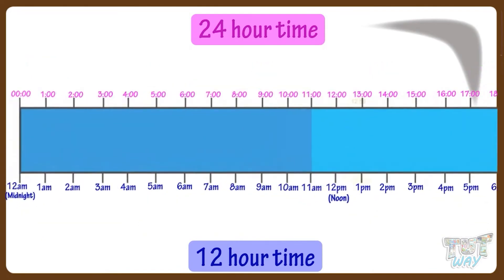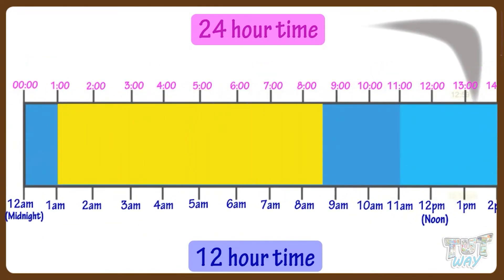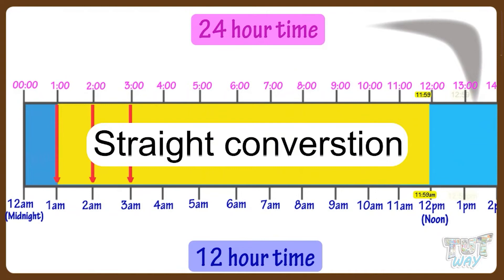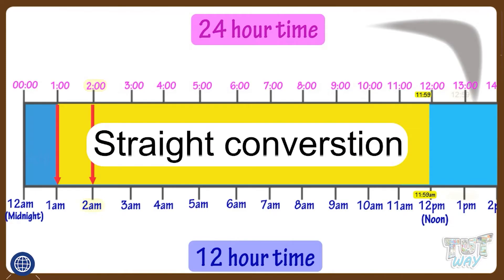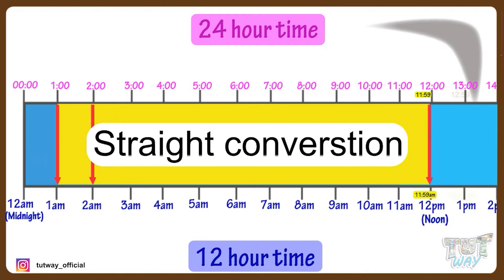Between 1 and 11:59 in the 24-hour clock system, it is a straight conversion to a.m. — just add a.m. to the time. So 1 o'clock is 1:00 a.m., 2 o'clock is 2 a.m., and the same is true up to 11:59, so 11:59 is 11:59 a.m.